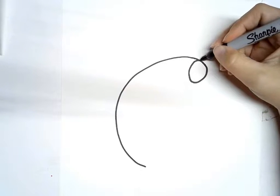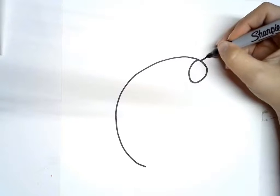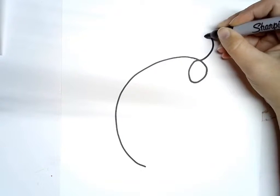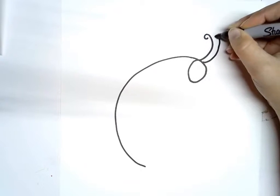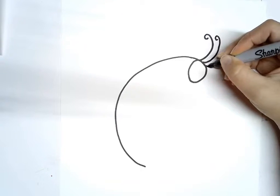And then we're going to draw the hair coming off of it. So we'll draw a few lines that look kind of like long little curls or waves coming off.